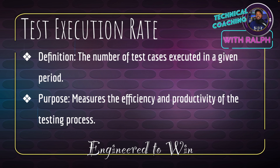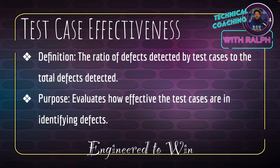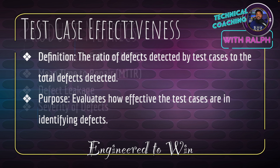Test execution rate is the number of test cases executed in a given period, measuring testing efficiency and productivity. Test pass rate is the percentage of executed test cases that pass — for example, out of a thousand tests, is it a 98% pass rate? Test case effectiveness is the ratio of defects detected by test cases to total defects detected, evaluating whether your test cases — including negative paths — are actually catching defects.